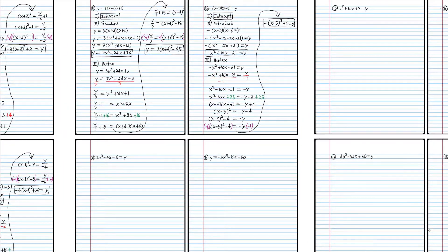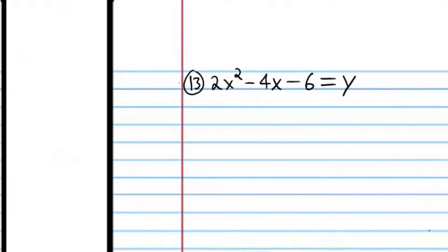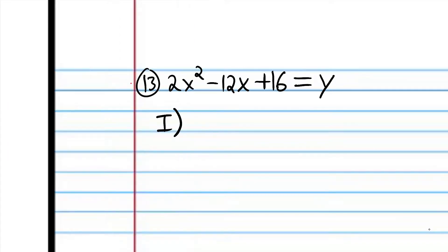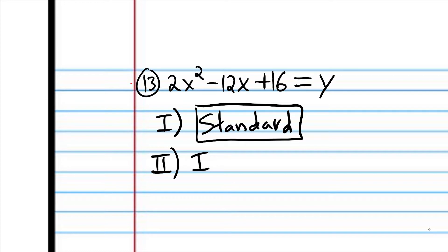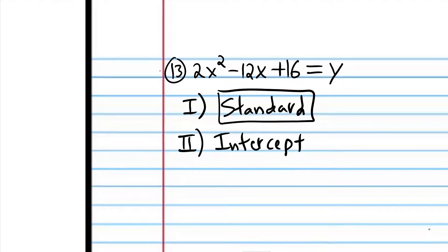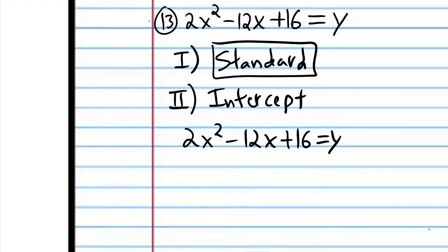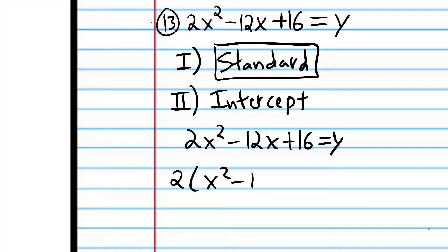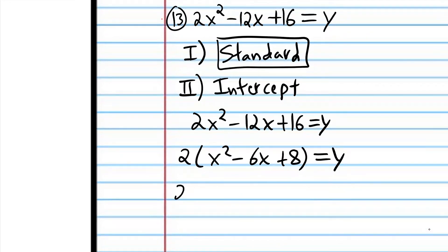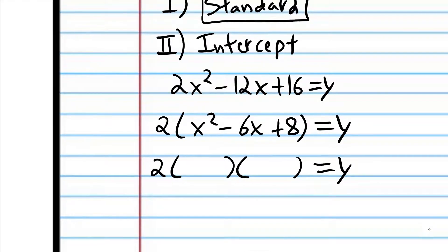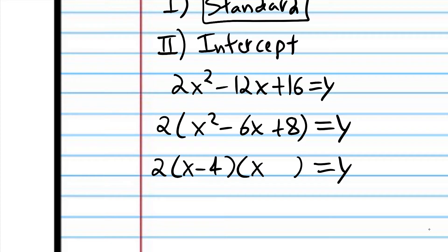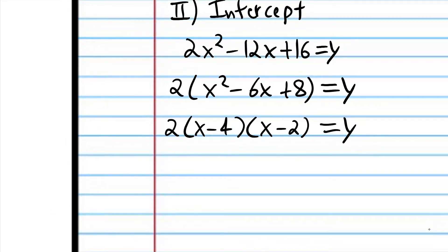First we're going to identify the form — standard form. Then we're going to change to intercept form. I'm going to factor out the greatest common factor from all those terms since there is a common factor. Now we can just factor the quadratic expression: what two numbers multiply to 8 and add up to negative 6? That's negative 4 and negative 2. And that is now intercept form.